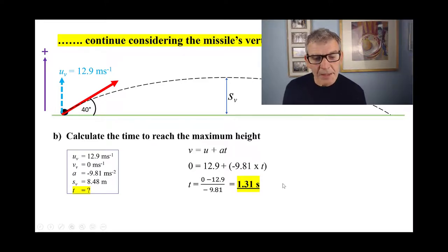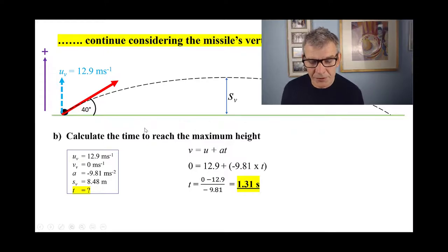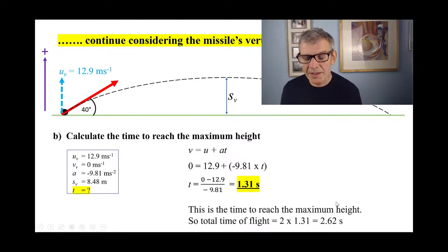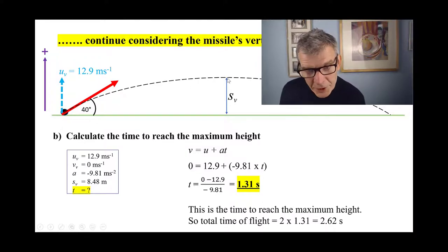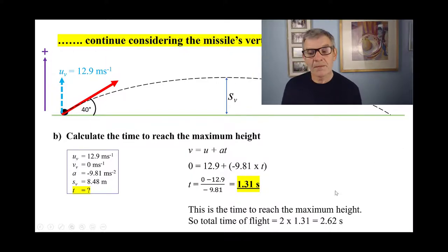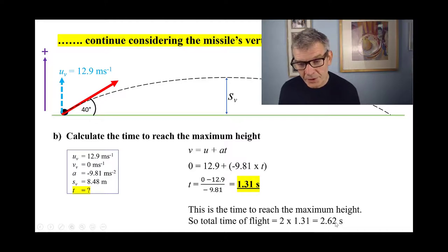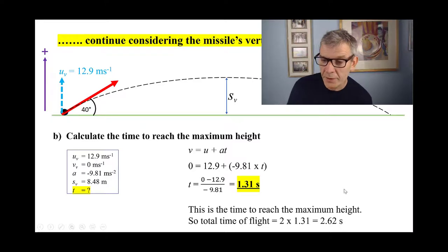While we're here: the next part asks for the total time of flight. If we know the time to reach the maximum height is 1.31 seconds, the total time of flight is twice that — so total time of flight = 2 × 1.31 = 2.62 seconds. We'll come back to that for Part C.